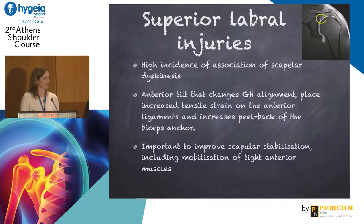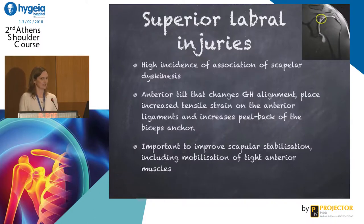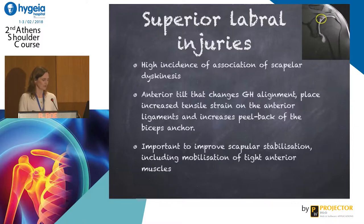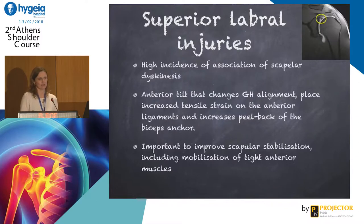Superior labral injuries are very common and have a high incidence of association with scapular dyskinesis. This injury results in an anterior tilt of the scapula that changes glenohumeral alignment, places increased strain on the anterior ligaments, and increases the peel-back of the biceps anchor. For athletes also having GIRD — glenohumeral internal rotation deficit — this becomes even worse. For these patients, it is very important to improve scapular stabilization, including mobilization of the tight anterior muscles.